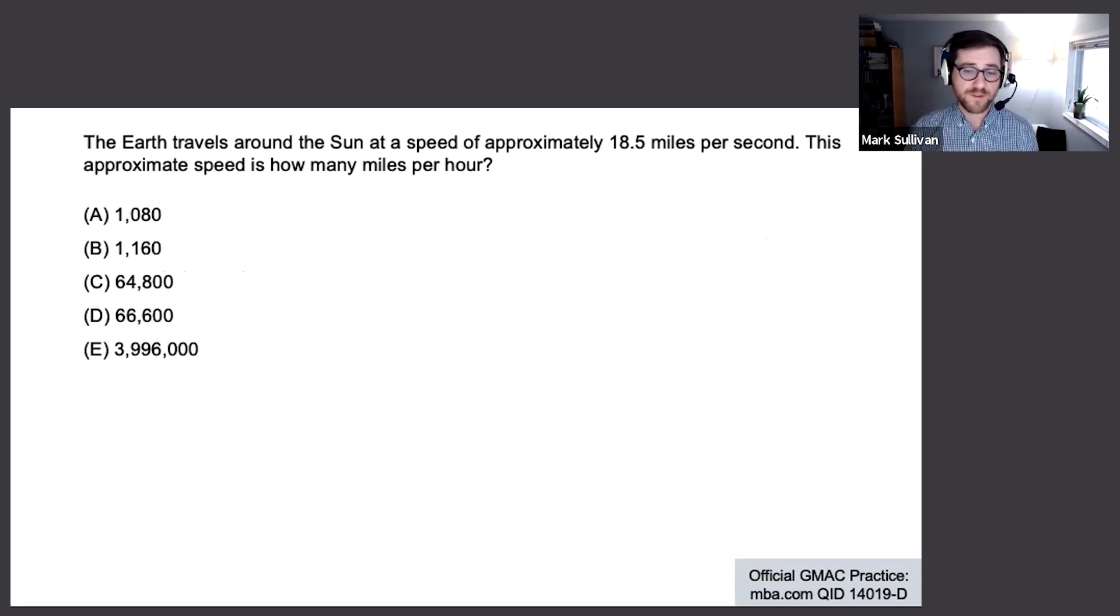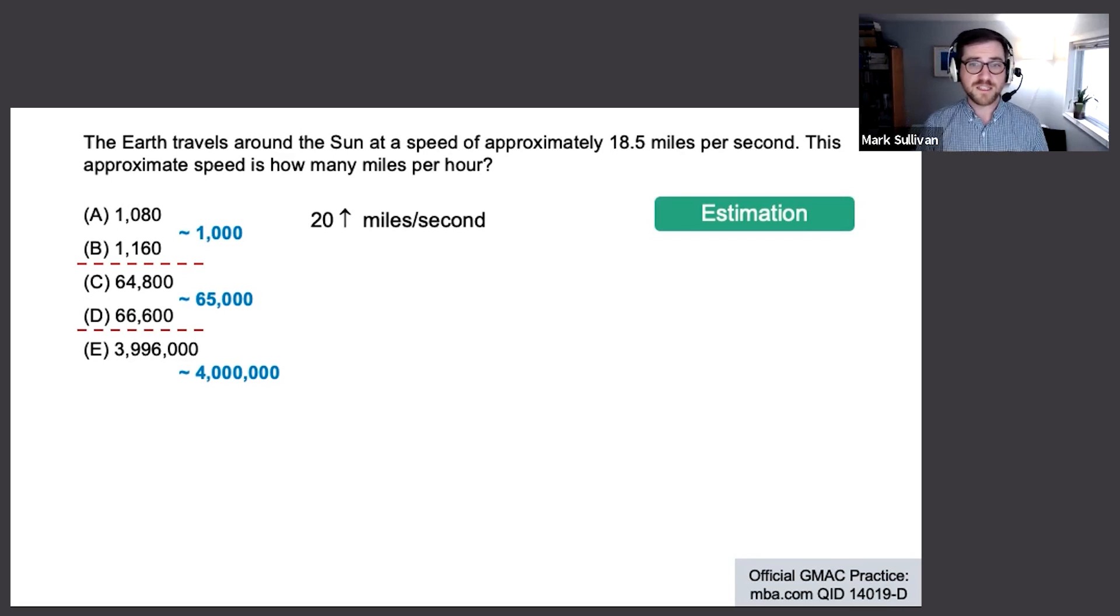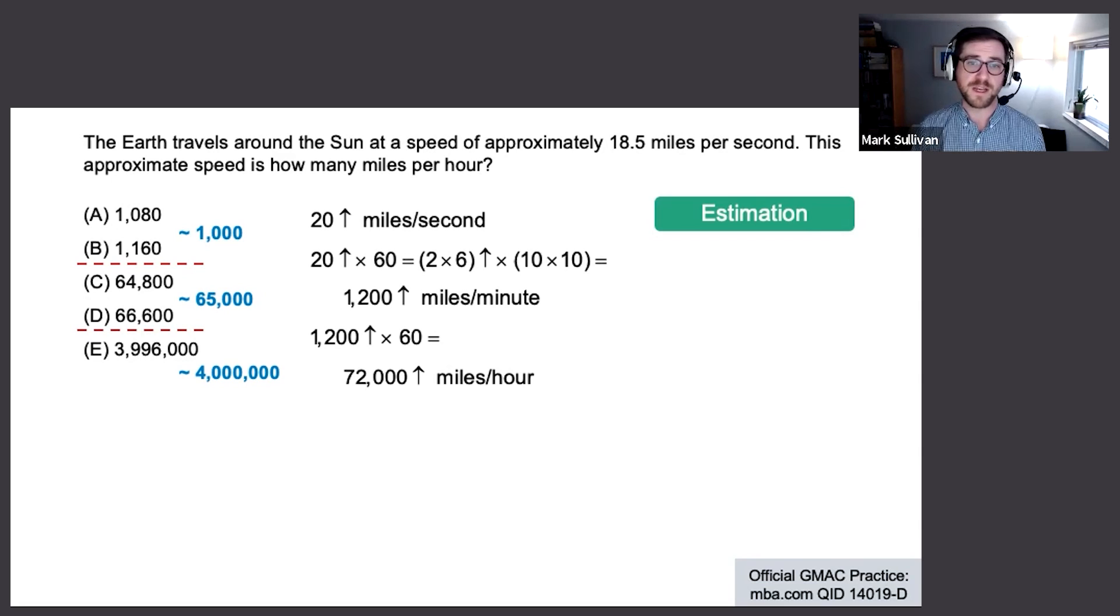The answer choices always have a wealth of information to reveal. Did you notice these are the same ones we were looking at earlier? We've got two around 1,000, two around 65,000, and one around 4 million. Let's start by just estimating. This has the potential to be good enough. 18.5 miles per second - who has the time? We're going to estimate that as 20 miles a second. Multiply by 60 to turn that into miles a minute, you've got 1,200 of those. Times another 60 will get you miles per hour: 72,000 miles per hour. So goodbye A, B, and E.